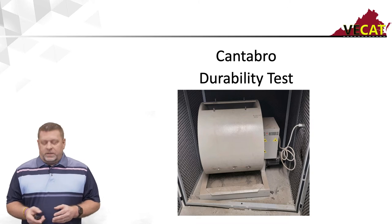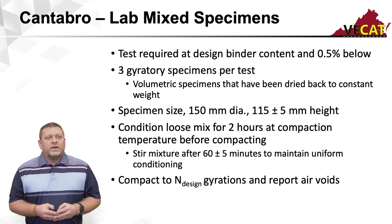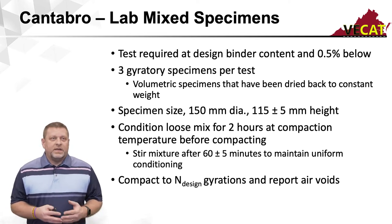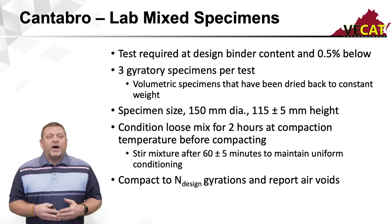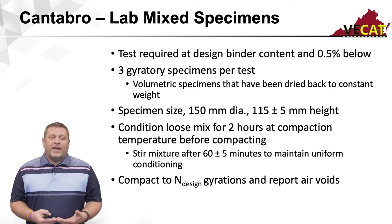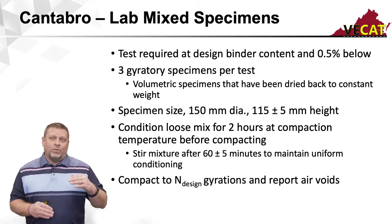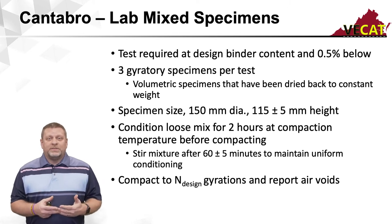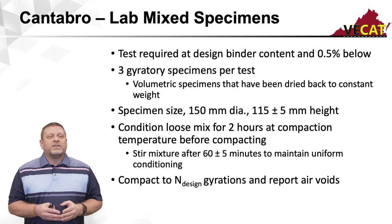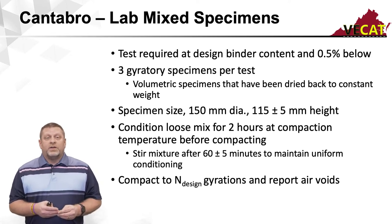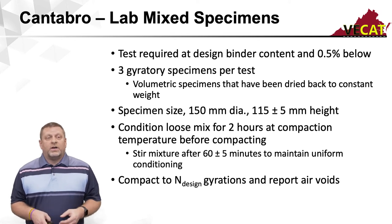Now let's talk about the Canabro durability test. The Canabro is actually done on your volumetric specimens, required at design binder content and 0.5% below design asphalt content. This test requires a minimum of three gyratory specimens per test. The biggest error I've seen is people not accounting for water — this is essentially dry weight minus weight loss after the Canabro test, so if you leave water in your specimens, that becomes weight loss. It's important to dry these pills back properly prior to running this test. Specimen size is 150 millimeters by 115 millimeters.